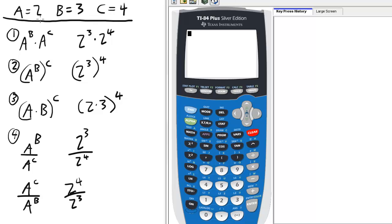To derive the laws of exponents using only the calculator, we will need to make a lot of substitutions. We will use A is 2, B is 3, and C is 4.